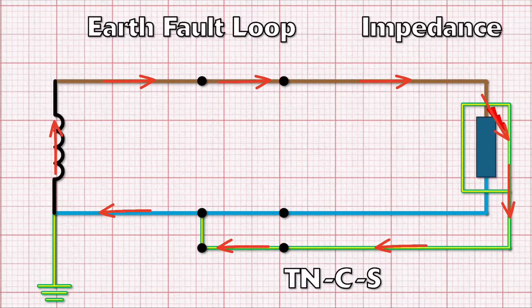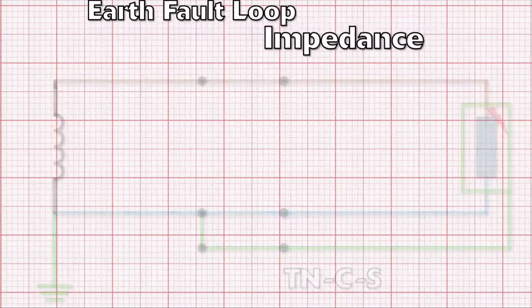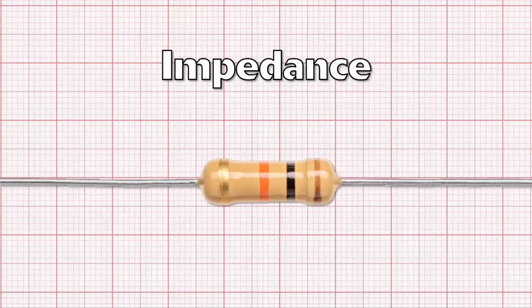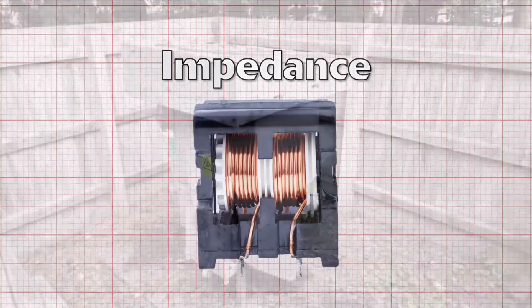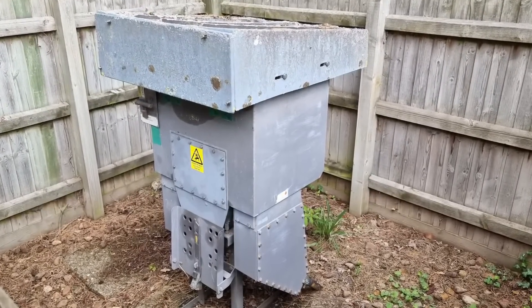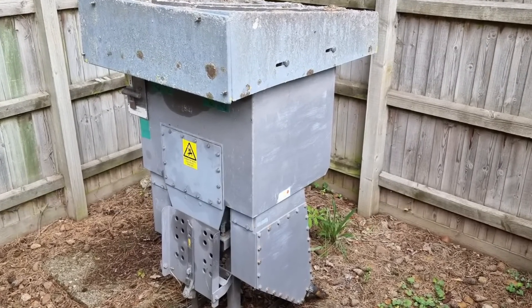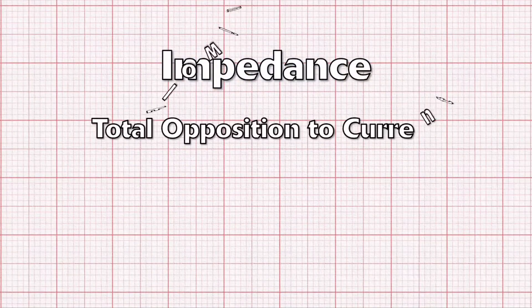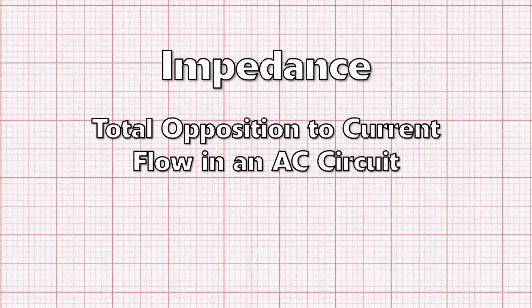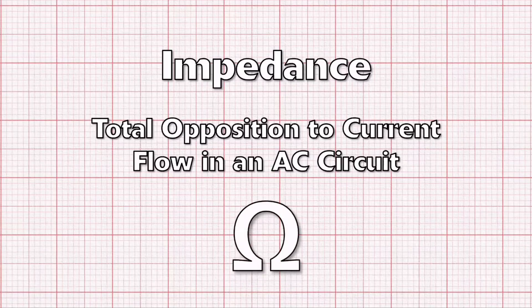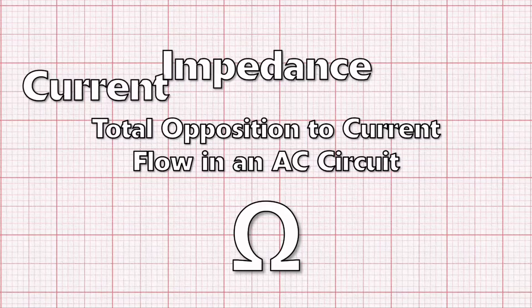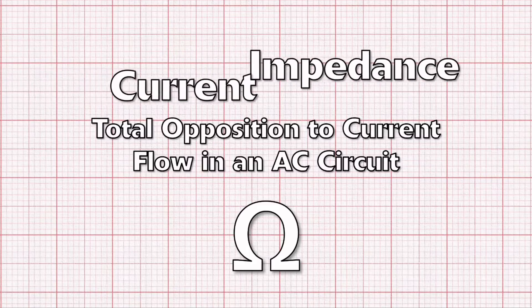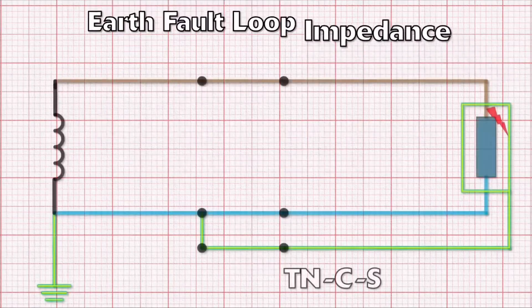What about the 'impedance' part? Impedance is just another type of opposition to current flow. It's similar to resistance but takes into account the extra opposition caused by coils in AC circuits. Because the transformer feeding the property is a large coil, it adds opposition in the form of inductive reactance. Impedance is the total opposition to current flow in an AC circuit, measured in ohms, and it largely acts to stop the current from flowing.